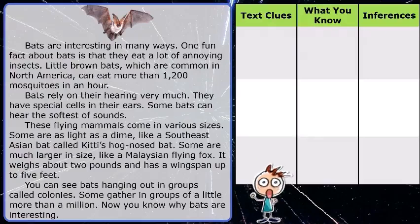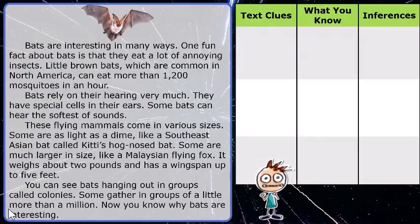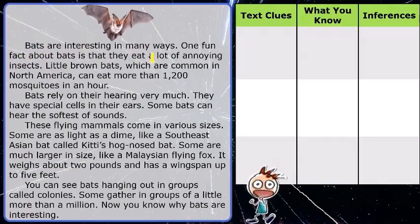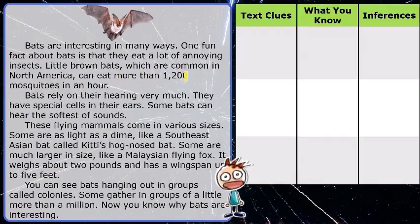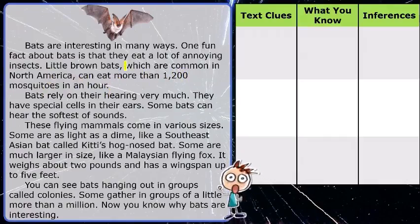Look at that awesome-looking bat. Let's start to read through our text. Bats are interesting in many ways. One fun fact — we know facts are coming up, so that's a good text clue — one fun fact about bats is that they eat a lot of annoying insects. Little brown bats, which are common in North America, can eat more than 1,200 mosquitoes in an hour!